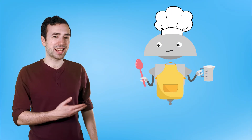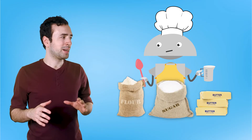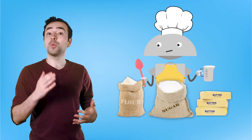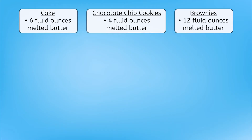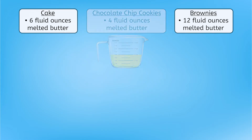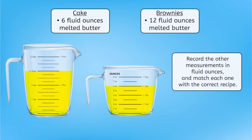Mia is getting a head start on measuring the flour, sugar, and butter, but got the recipes and measured ingredients mixed up. Let's see if we can figure out which measurements belong with which recipes. What do you notice about the units of measurement for the butter in each recipe? They're all fluid ounces, which means we can check the tiny marks on the measuring cups or pints to help us here. This first measuring cup shows one, two, three, four fluid ounces of butter. Which recipe does this belong with? The chocolate chip cookies. Now it's your turn — pause here to record the other measurements in fluid ounces and match them with their correct recipes.